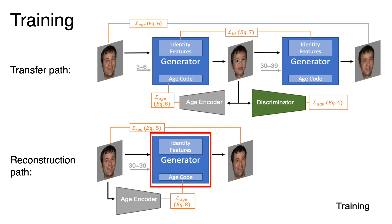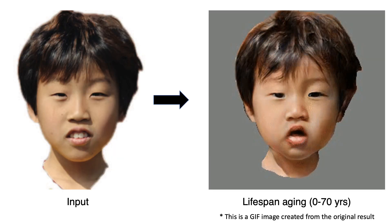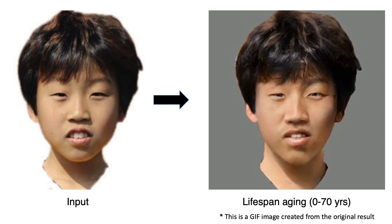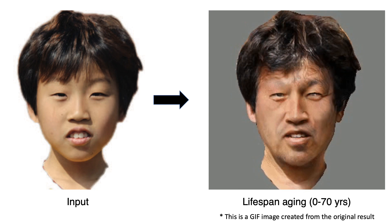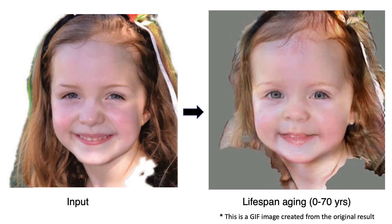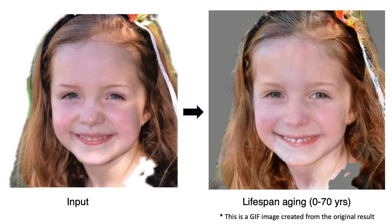The age encoder is used to map the original image to the latent age space. By interpolating in the learned latent age space, we are able to perform continuous age transformations and achieve state-of-the-art results.